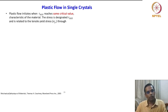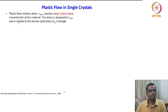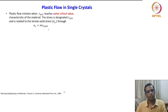Plastic flow initiates when tau_CRSS reaches some critical value characteristic of the material. This stress is designated tau_CRSS and is related to the tensile yield stress sigma through sigma_y equals m times tau_CRSS — this is also known as Schmid's law.